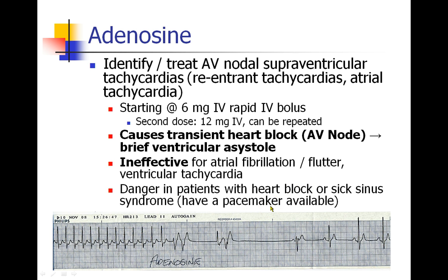That's adenosine. It's probably a good idea to have some artificial pacing patches available, just in case, and have some atropine available. It's not a good treatment for atrial fibrillation or flutter — it doesn't convert people out of those rhythms, but it's good for re-entrant tachycardias like SVT. If patients already have a bad heart, like heart block or sick sinus syndrome, I would definitely have a pacemaker available. This is not a drug you want to give without appropriate backup.